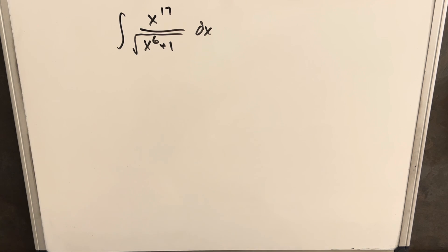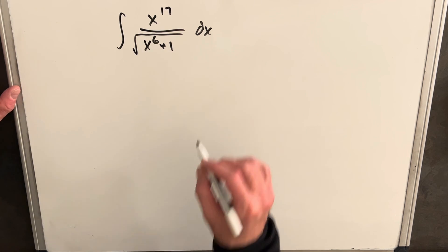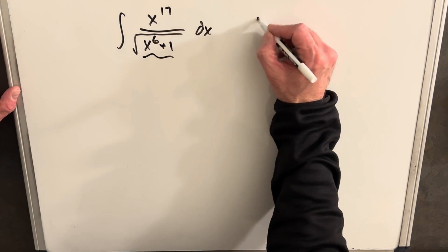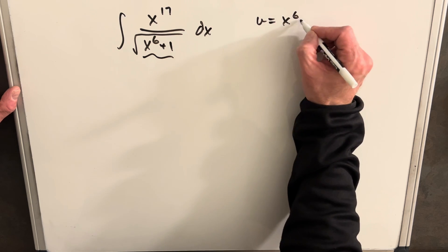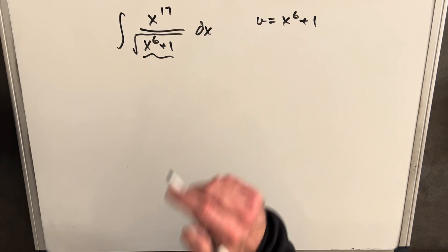Definitely looking at u substitution. Your first thought might be to try to make this a square term. You could substitute u equals x cubed, but I'm going to actually substitute u for the whole thing. I think we'll see that it's going to work out better, but that way we can avoid any trick substitution, I guess.